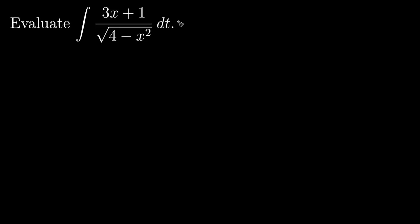To evaluate this integral, we're going to split up the fraction as 3x over the square root of 4 minus x squared plus 1 over the square root of 4 minus x squared dx. And we're going to treat these integrals separately.